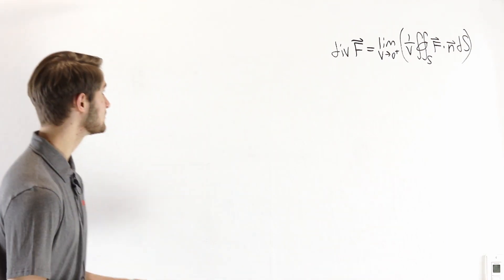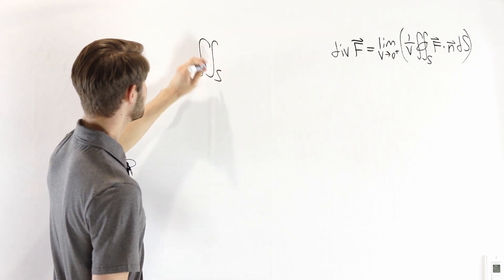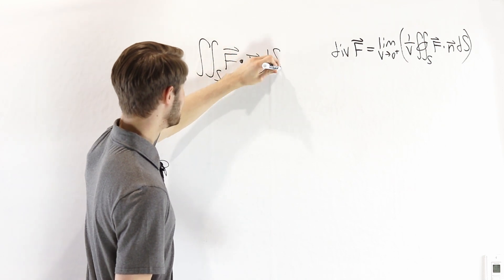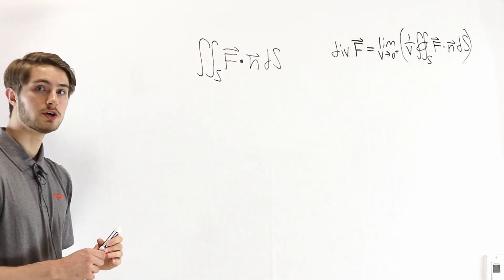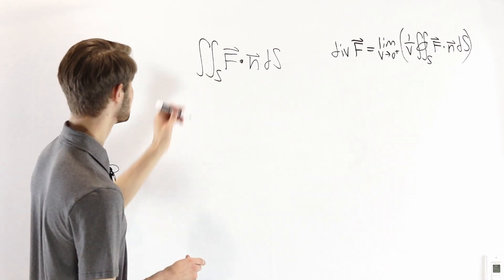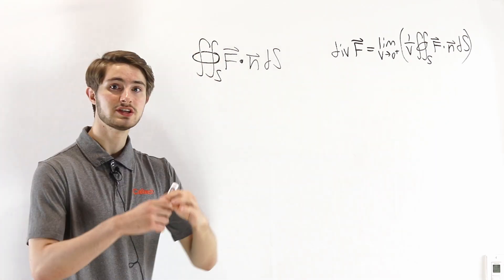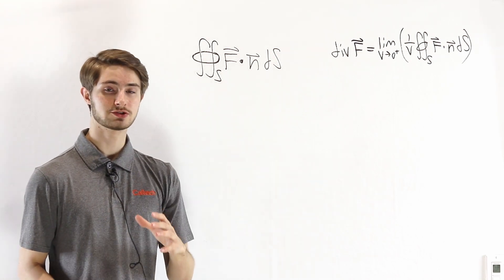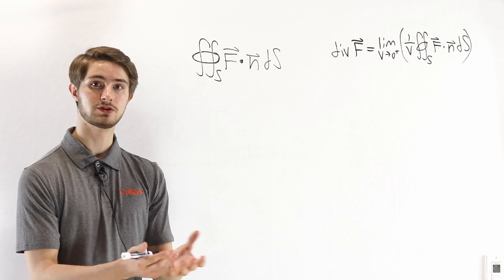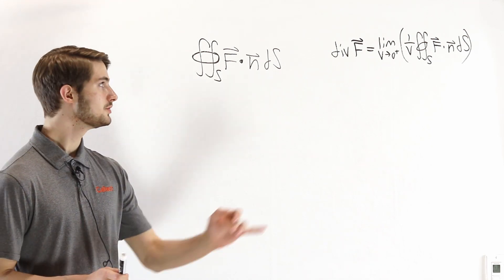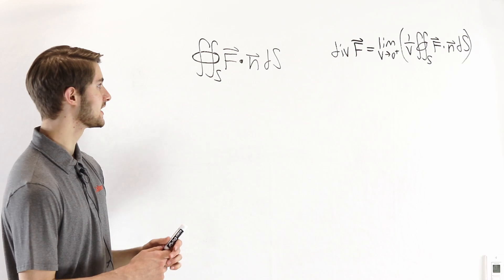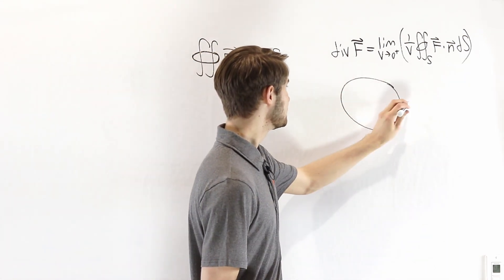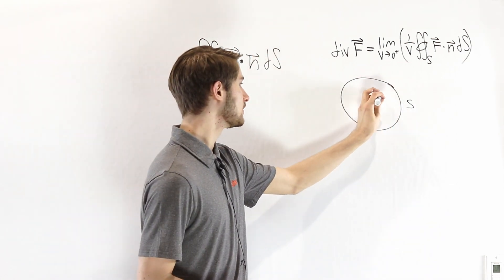To understand the divergence theorem, we're going to start by considering a surface integral in a vector field. We take the integral of F dot n dS. We're also going to say that this is a closed surface, meaning the surface encloses a particular volume. For example, a sphere would be a closed surface because it encloses the volume of a ball. We're also going to choose the orientation of the normal vector to point outward. So we have our surface S that encloses a volume which we'll call V.